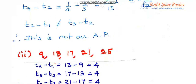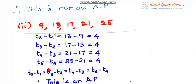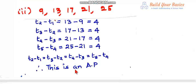Third substitution: we are given five terms 9, 13, 17, 21, 25. Let us find t2 minus t1, that is 13 minus 9, which is 4. Then t3 minus t2 is 17 minus 13, that is also 4. t4 minus t3 is 21 minus 17, that is 4. t5 minus t4 is 25 minus 21, that is 4. All differences are equal: t2 minus t1 equals t3 minus t2 equals t4 minus t3 equals t5 minus t4, so this is an AP.